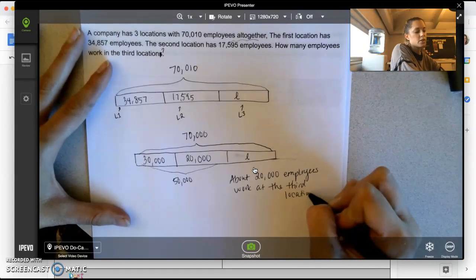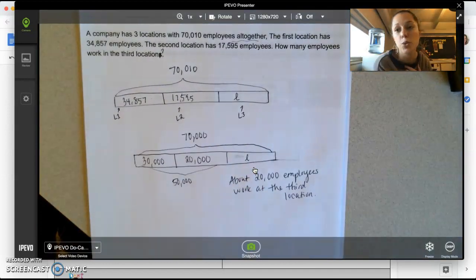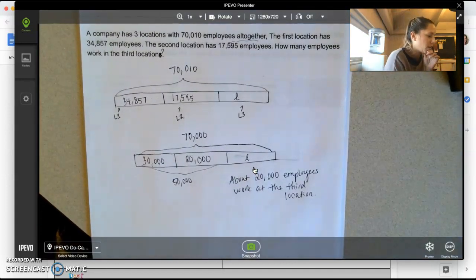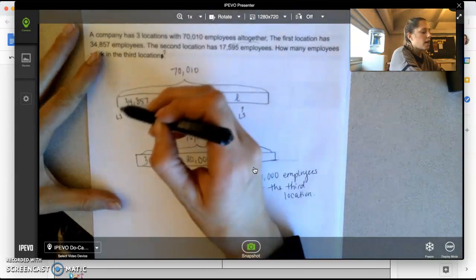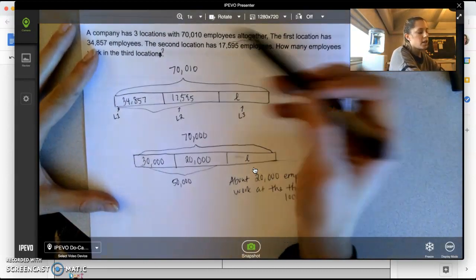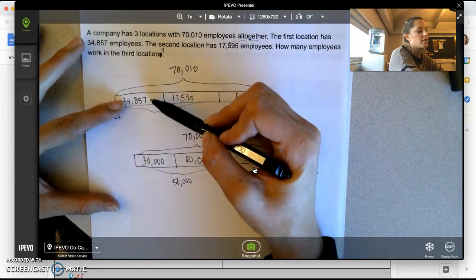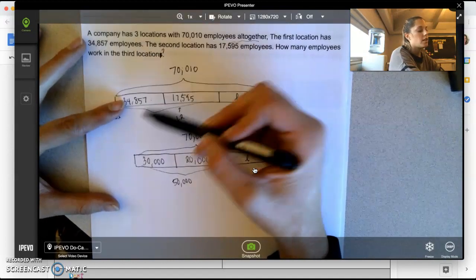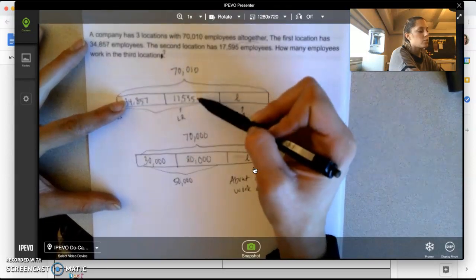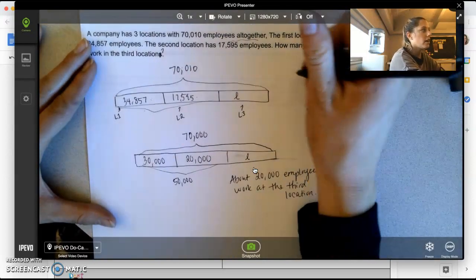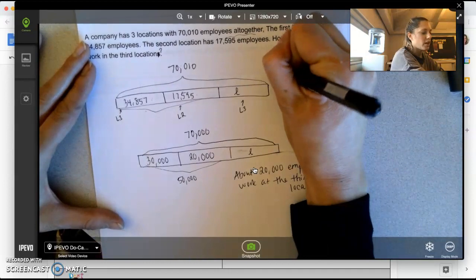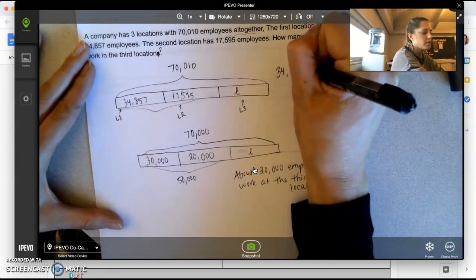So I know if my answer is reasonable, it's going to be about 20,000. So let's check here. I can either add these two sections together and then subtract them, or I can take 70,010, subtract 34,857, and then that difference and subtract 17,595. I think the easiest way would be to add these two parts together. It's just easiest for my brain.